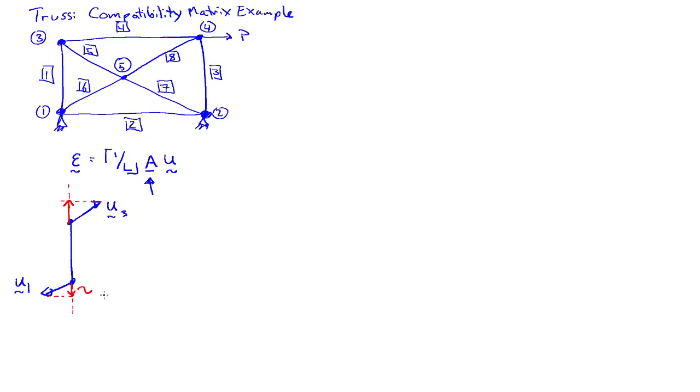So this term here, that is going to be E31 transpose U1, so that gives me the projection, or if you want, you can write that as E31 dot U1. It doesn't matter.